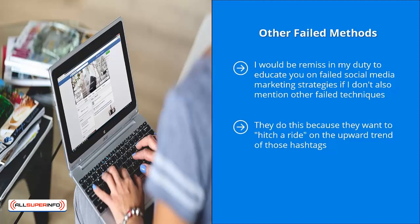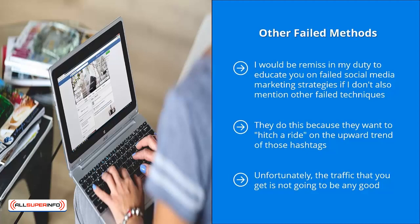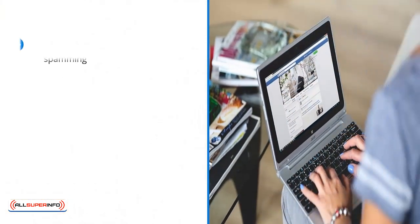They basically publish niche-specific content but use unrelated or irrelevant hashtags paired with their content. They do this because they want to hitch a ride on the upward trend of those hashtags. They know people are searching for those hashtags and that these trends are hot, so they want to poach as many eyeballs as possible. Unfortunately, the traffic you get is not going to be any good. People are looking for specific types of information, and when they see your content is obviously unrelated, they're not going to click through. You might even get reported.